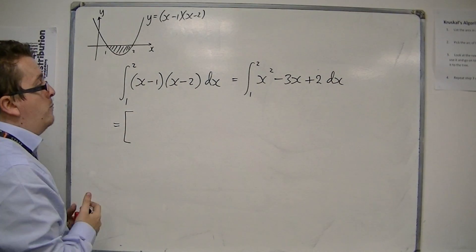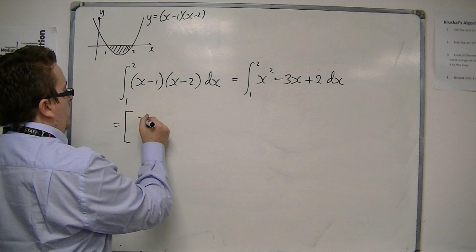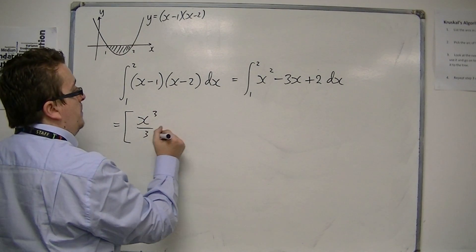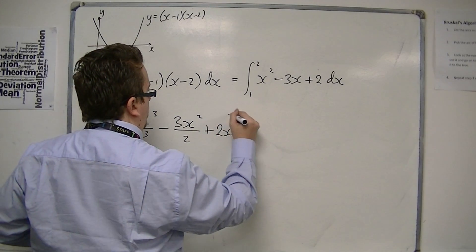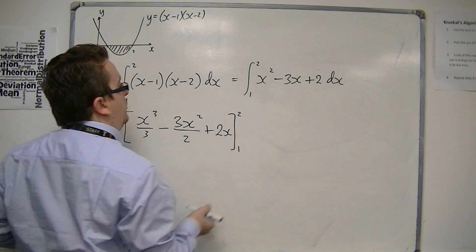Then introduce the square brackets. So add 1 to the power, divide by the new power, plus 2x there. Evaluate between 1 and 2.